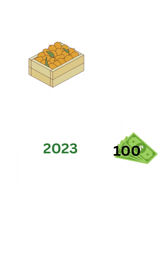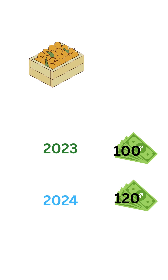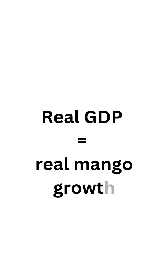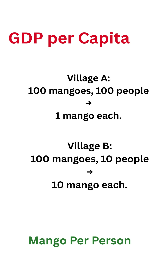But what if mango prices go up? Let's say a basket of mangoes costs 100 coins in 2023 and 120 coins in 2024, but it's the same basket of mangoes. GDP went up — but did we really grow more? That's called nominal GDP. If we remove the price increase, that gives us real GDP, which shows real mango growth.